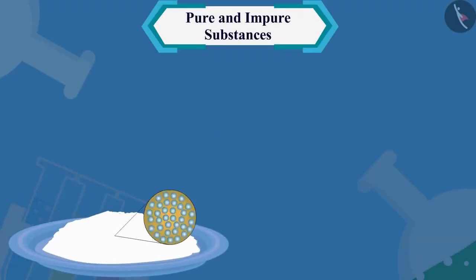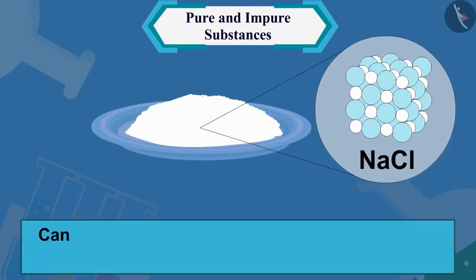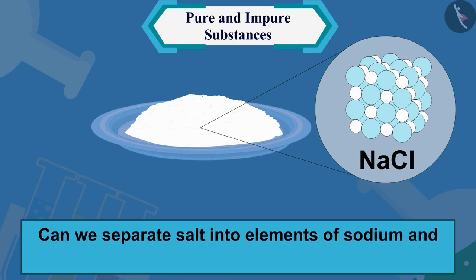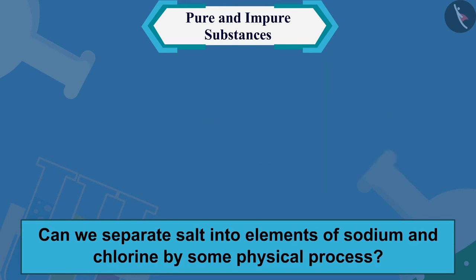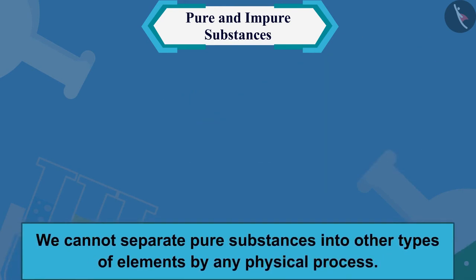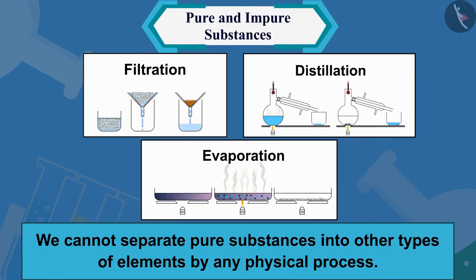Therefore we can say that salt is a pure substance. We know that salt is made up of sodium chloride molecules. Can we separate salt into the elements sodium and chlorine by some physical process? No. Therefore, we can say that we cannot separate pure substances into other types of elements by any physical process.